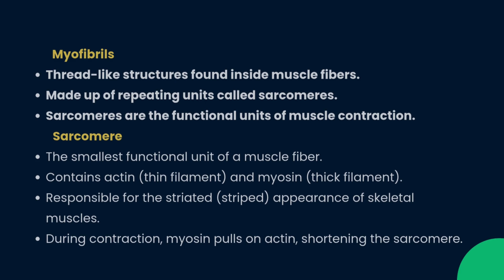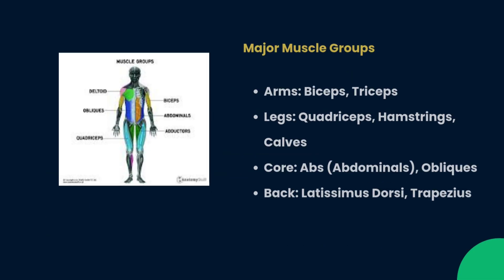Myofibrils are made up of repeating units called sarcomeres — the functional unit of muscle contraction. The sarcomere is the smallest functional unit of a muscle fiber and contains actin and myosin. It is responsible for the striated appearance of skeletal muscle. During contraction, myosin pulls on actin, shortening the sarcomere.